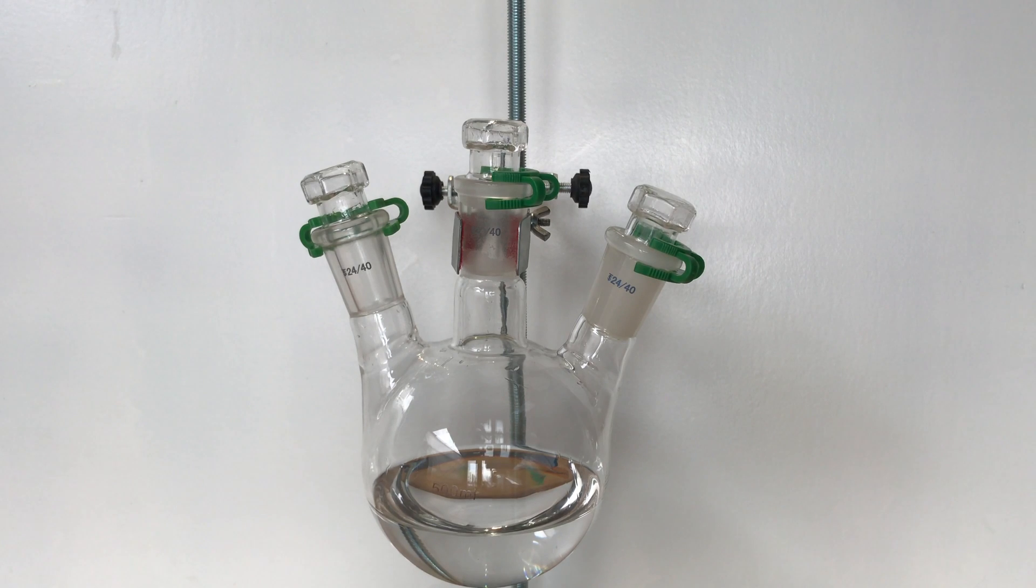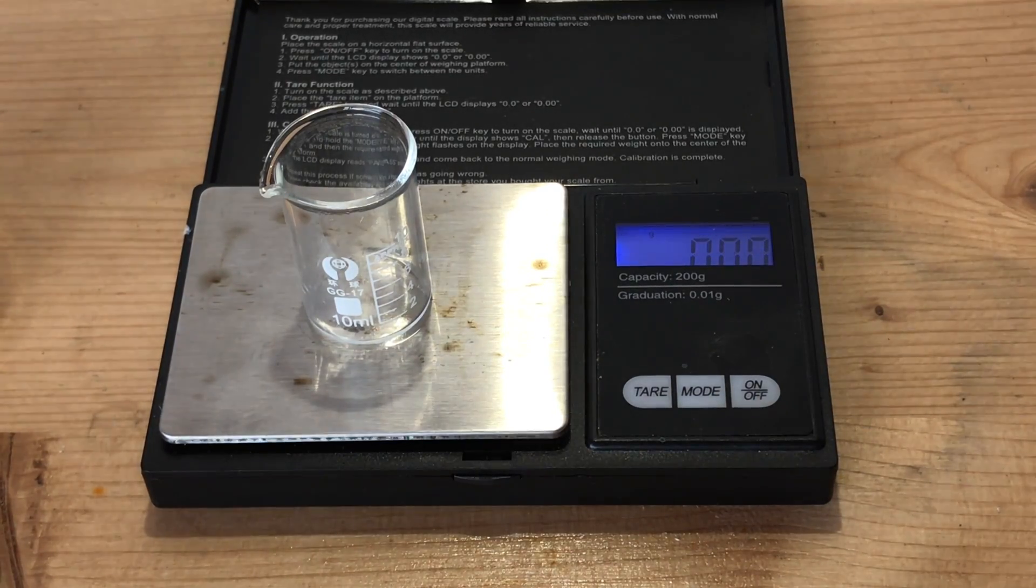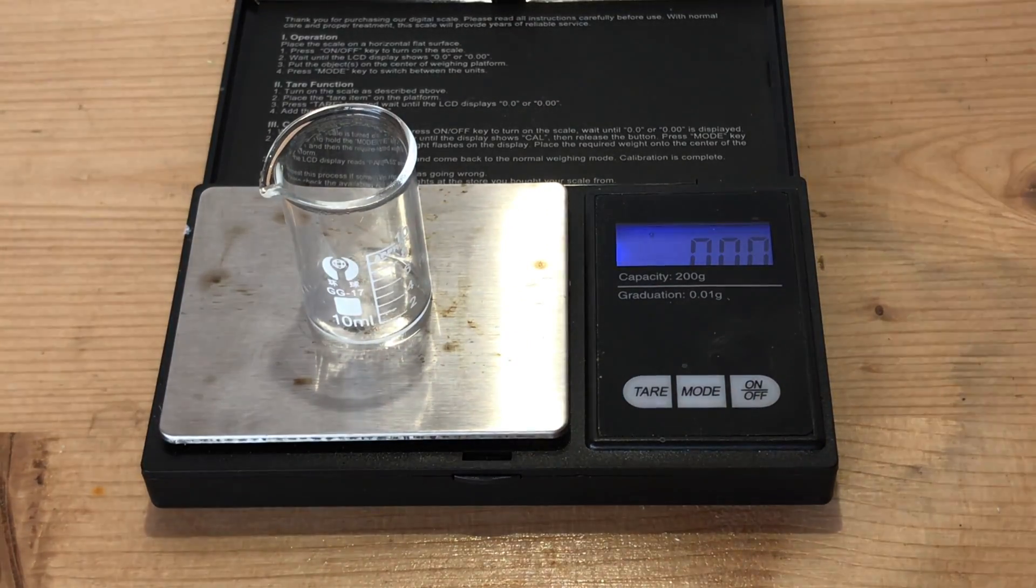After one and a half hours of work, this is the acid we've got. Now, before bottling, it is recommended to measure the density.